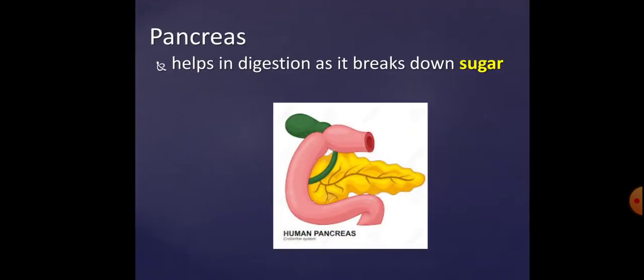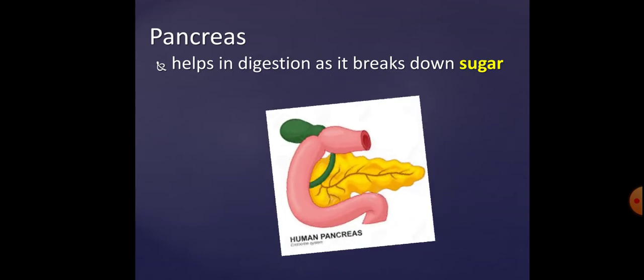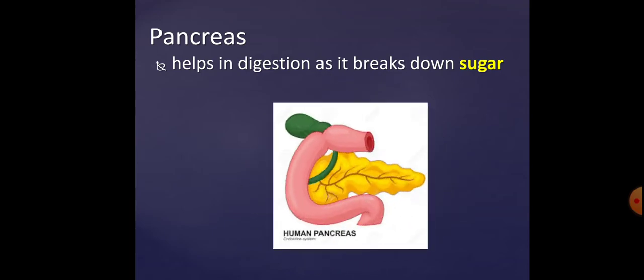Finally, the pancreas — as we said, it looks like a plant leaf — and it helps to break down sugar.